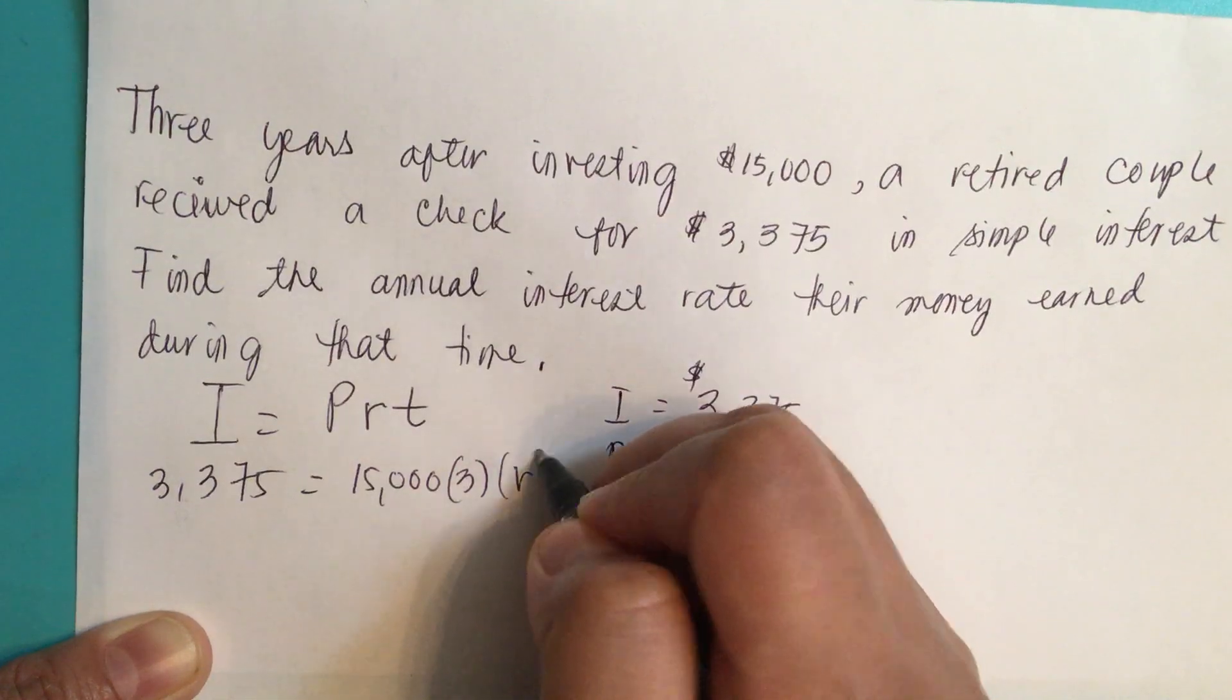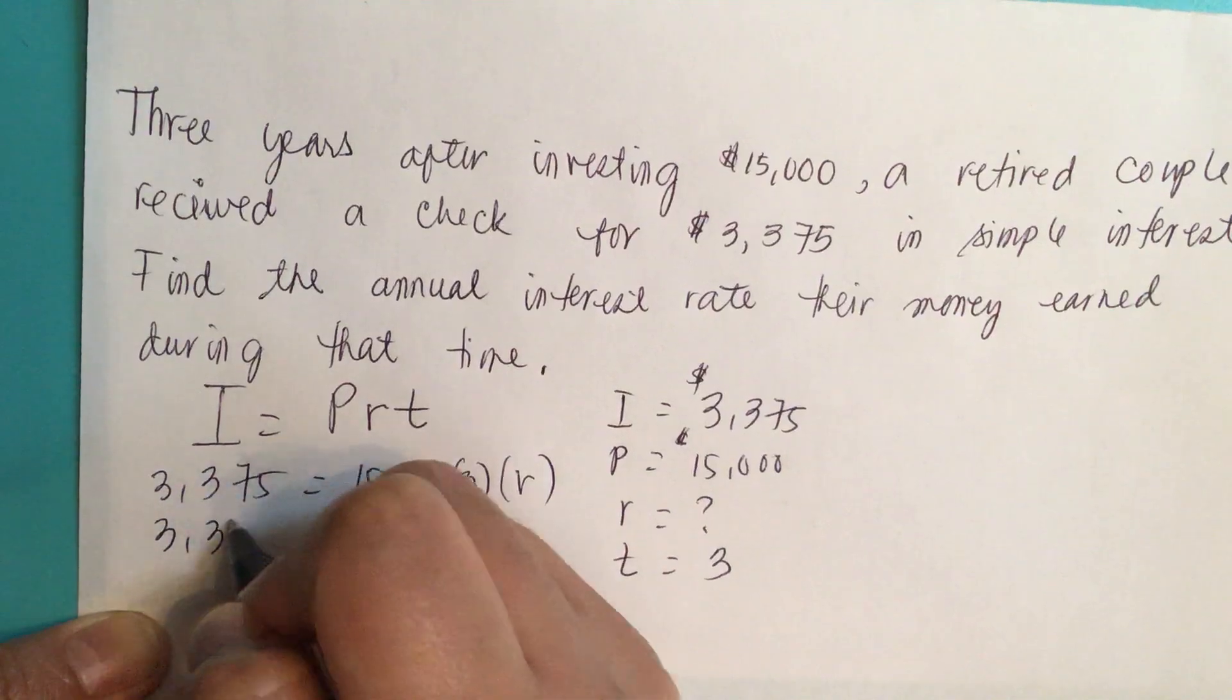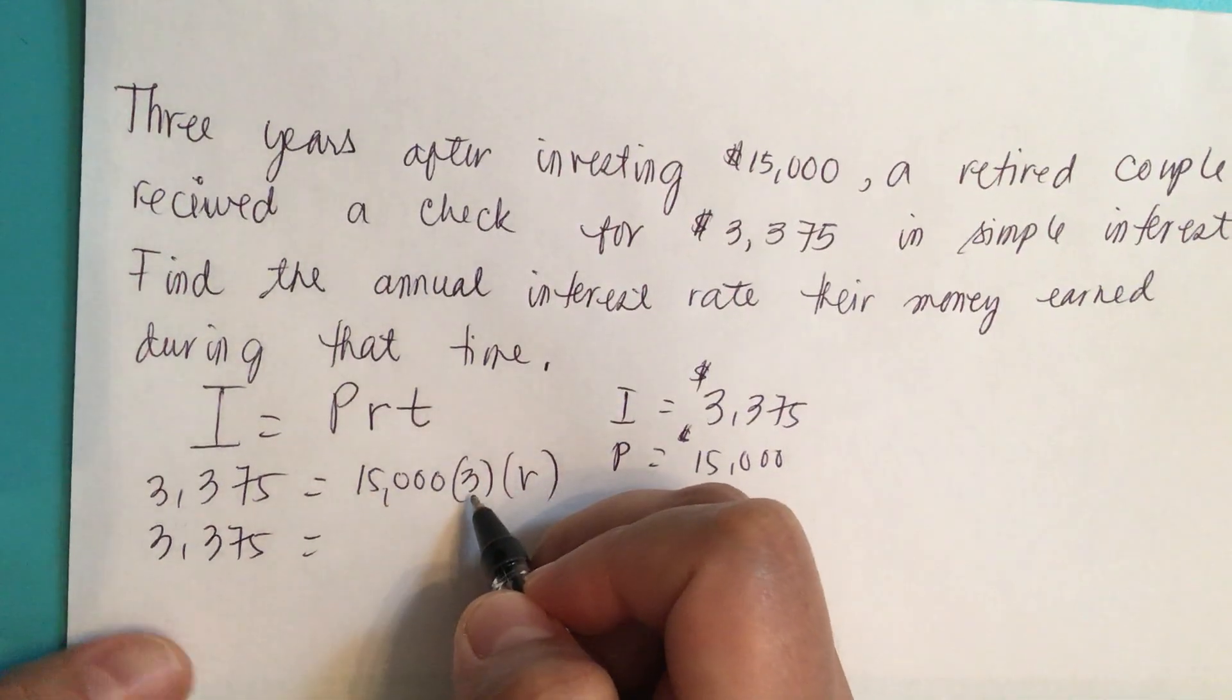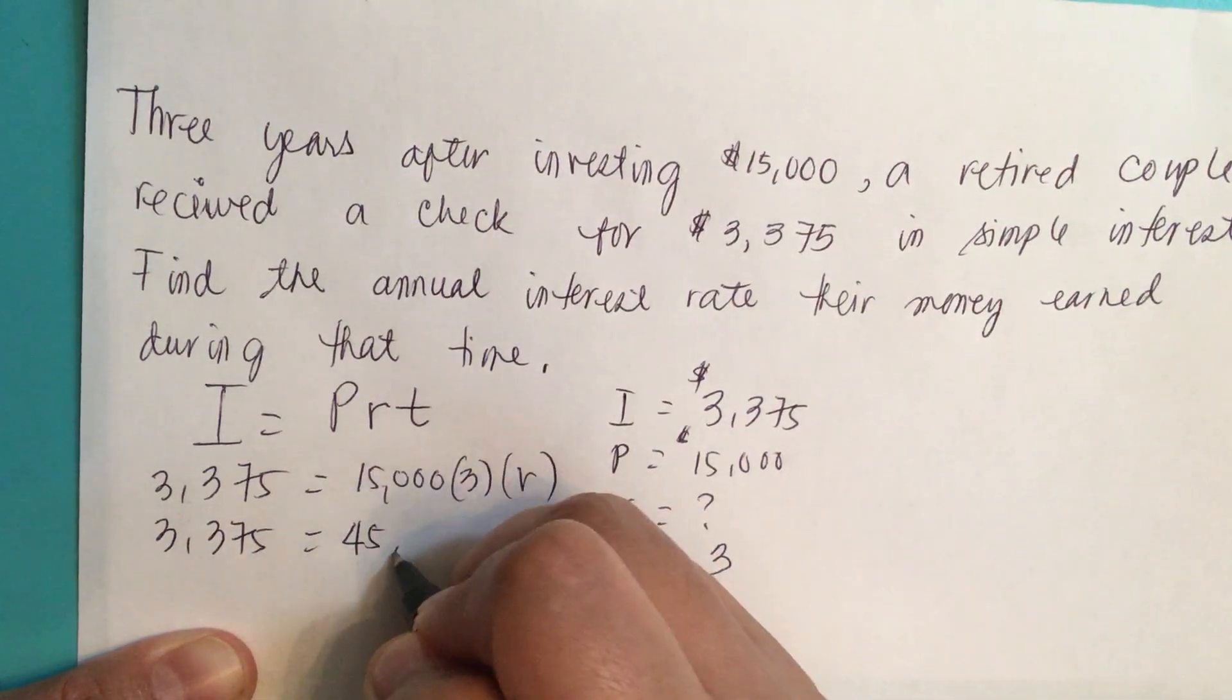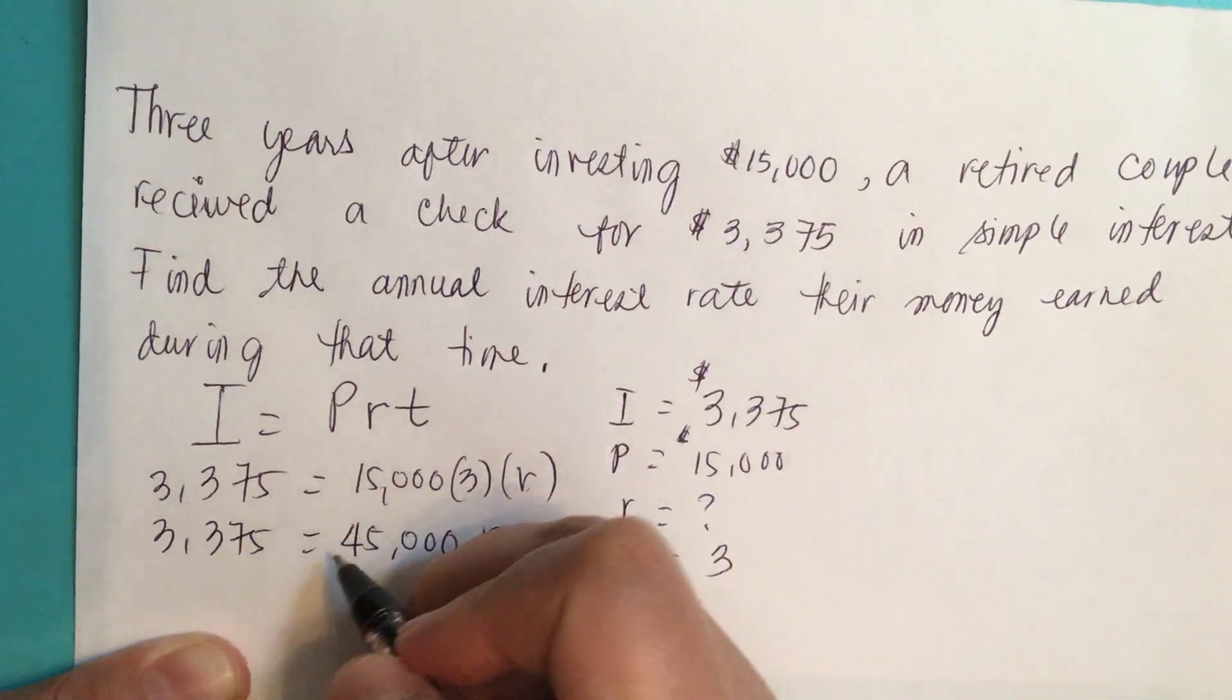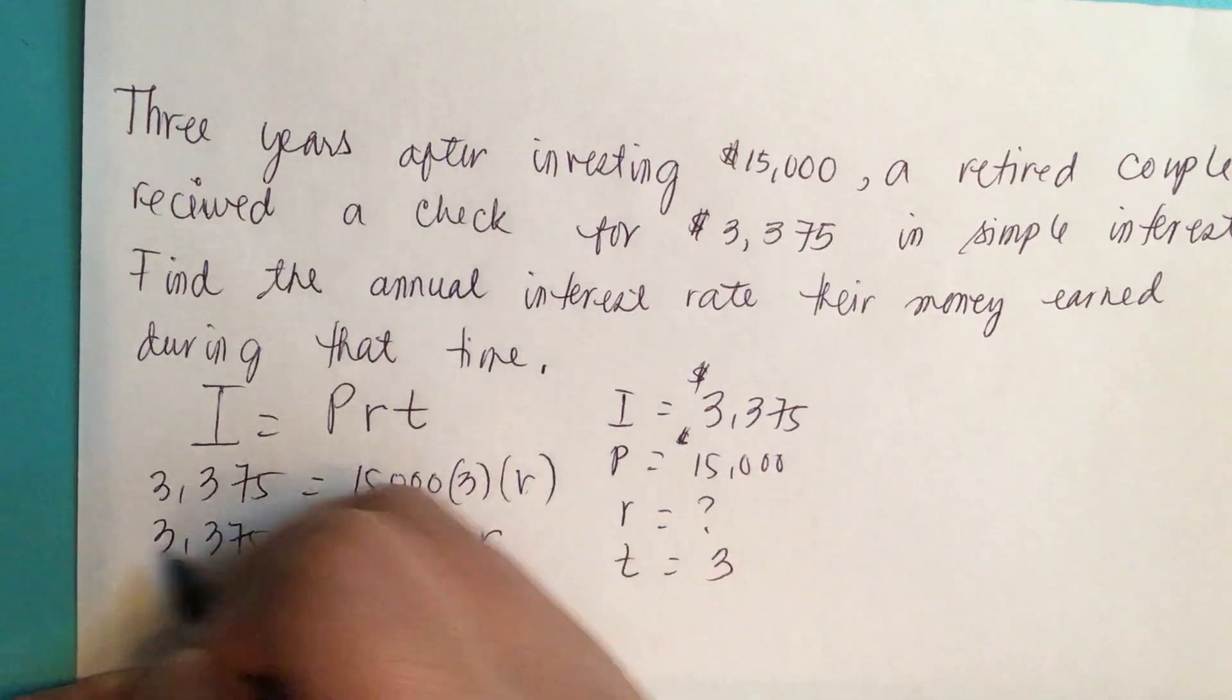And then R, we do not know. So $3,375 equals $15,000 times 3, which is $45,000. Then we divide both sides by $45,000.